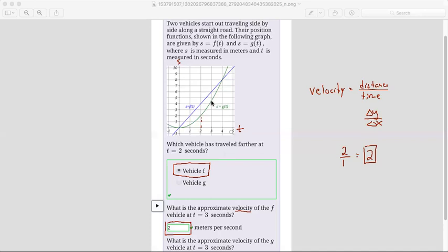So with the tangent line, we're trying to approximate the slope. If we approximate the slope, it's going to look something like this at three. If we look at the slope of that, if we go one, two, three up and one over, it's going to be approximately three over one, so the velocity of the g vehicle at three seconds is going to be about three.